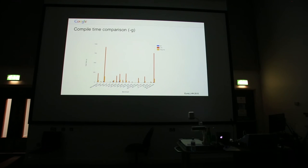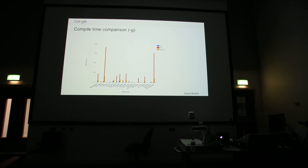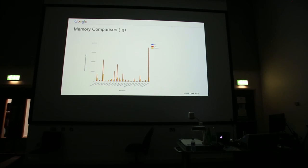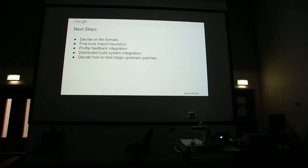For memory comparison with no debug info, thin LTO is a little bit more than O2 but quite a bit closer to O2 than LTO. With dash-G debug information, the scale changes since they have debug information, but thin LTO is still fairly close to O2. This confirms what we were assuming when we designed this: thin LTO is much, much closer to O2, much more scalable — which for us is really important since we have very large C++ applications.